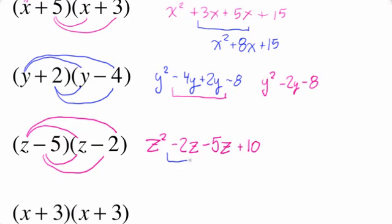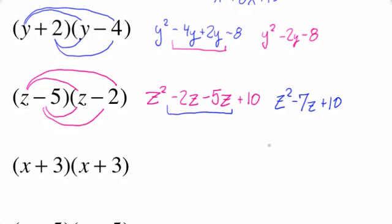And again, you should notice that we have like terms here. Negative 2Z minus 5Z. Now, a negative minus a number is a bigger negative. So my final answer is going to be Z squared minus 7Z plus 10. So you really have to have your integer skills. You have to know how to multiply positives and negatives to get these answers correct.